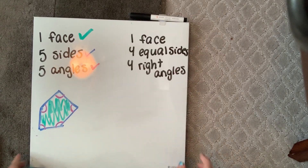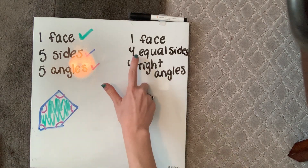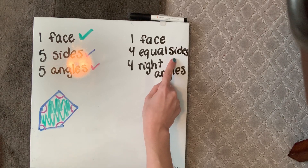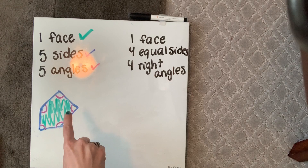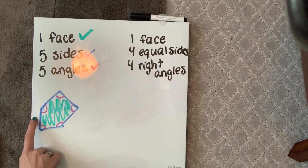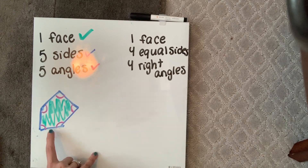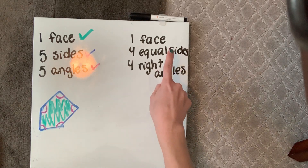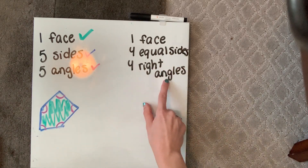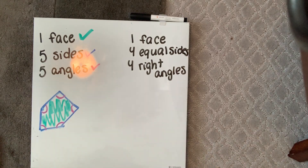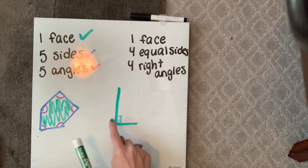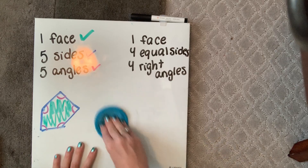Let's try another one. This one has one face as well, just like our previous one, but it's got four equal sides — that means all of my sides have to be the same length. And four right angles. Right angles look like L's; we know they're 90 degrees, so my angles have to be that perfect L shape. Let's go ahead and see if we can do that.